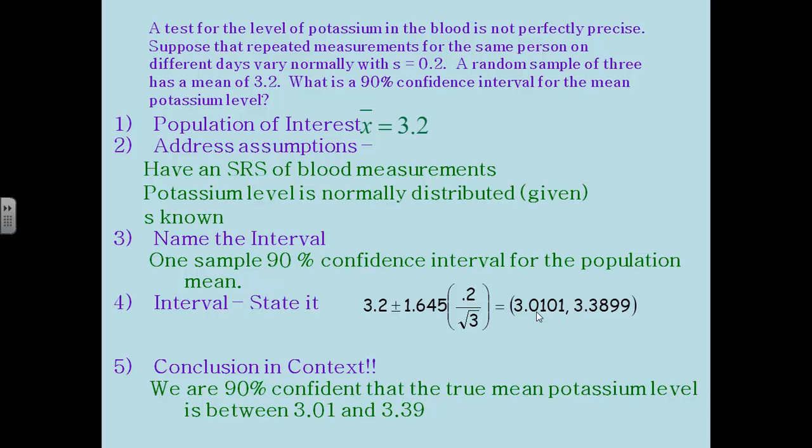Use the formula. This time on this slide I actually wrote it out. So x bar is 3.2. The 90 percent z star value is 1.645, so that's where that number comes from. The standard deviation is 0.2 and we're going to divide by the square root of 3. Use your calculator and you can figure out the interval is between 3.01 and 3.389. So then don't forget, very important to write your conclusion. We are 90 percent confident that the true mean potassium level is between 3.01 and 3.39.